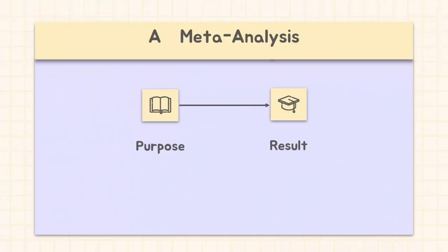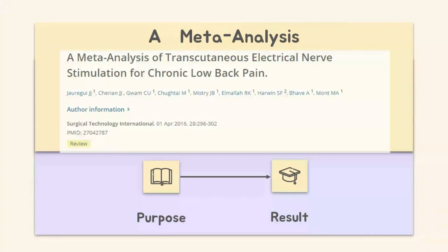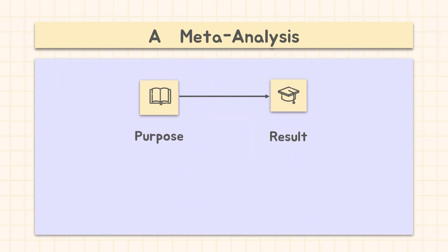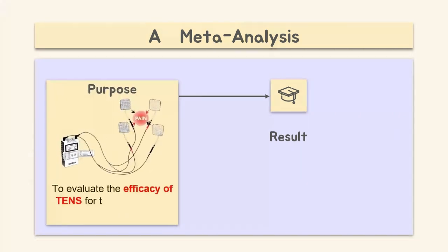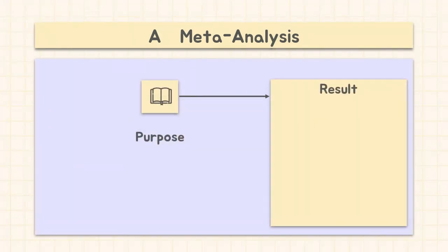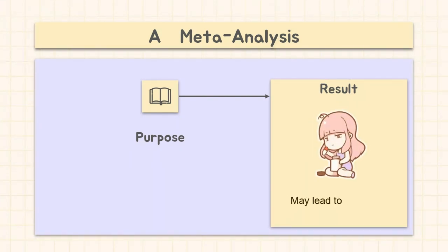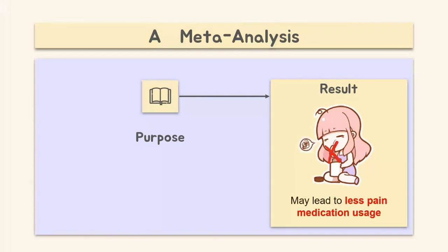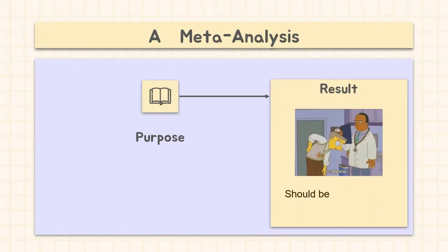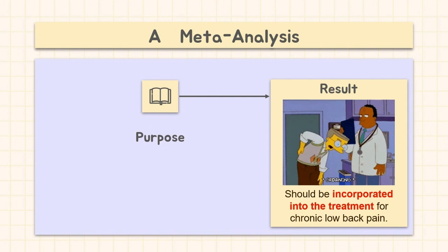Lastly, a meta-analysis of TENS for chronic low back pain has been done. They performed a meta-analysis to evaluate the efficacy of TENS for the treatment of chronic low back pain. The result shows that treatment of chronic low back pain with TENS demonstrated significant pain reduction. The application of TENS may also lead to less pain medication usage. Hence, it is suggested that TENS should be incorporated into the treatment for chronic low back pain.